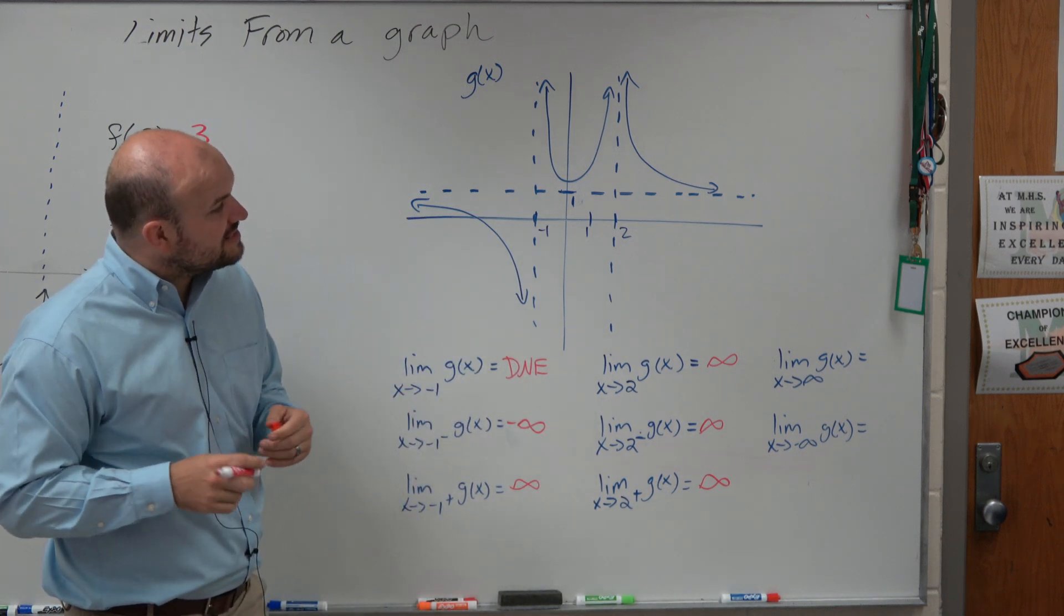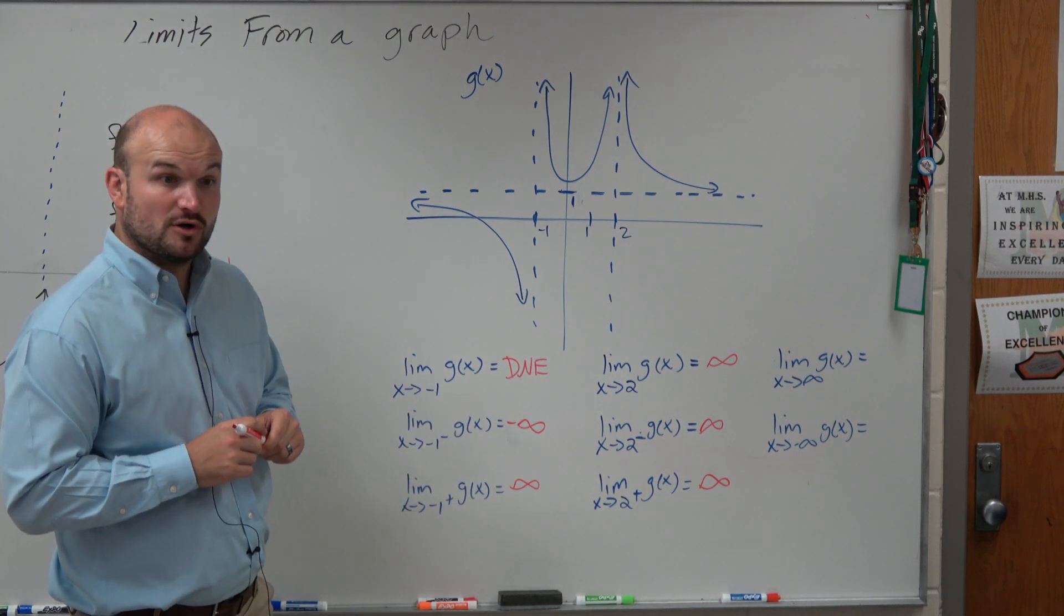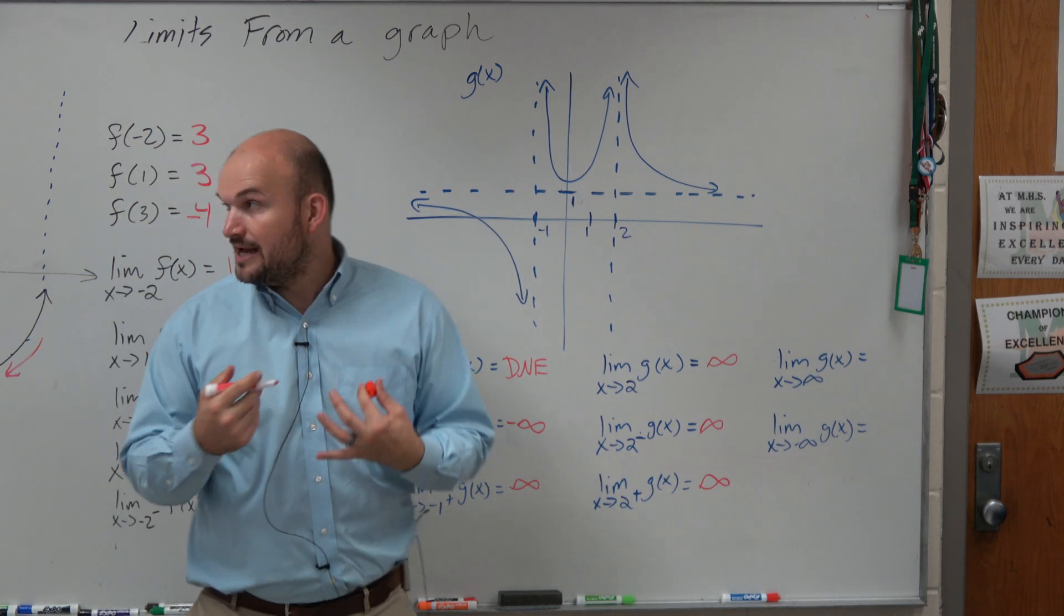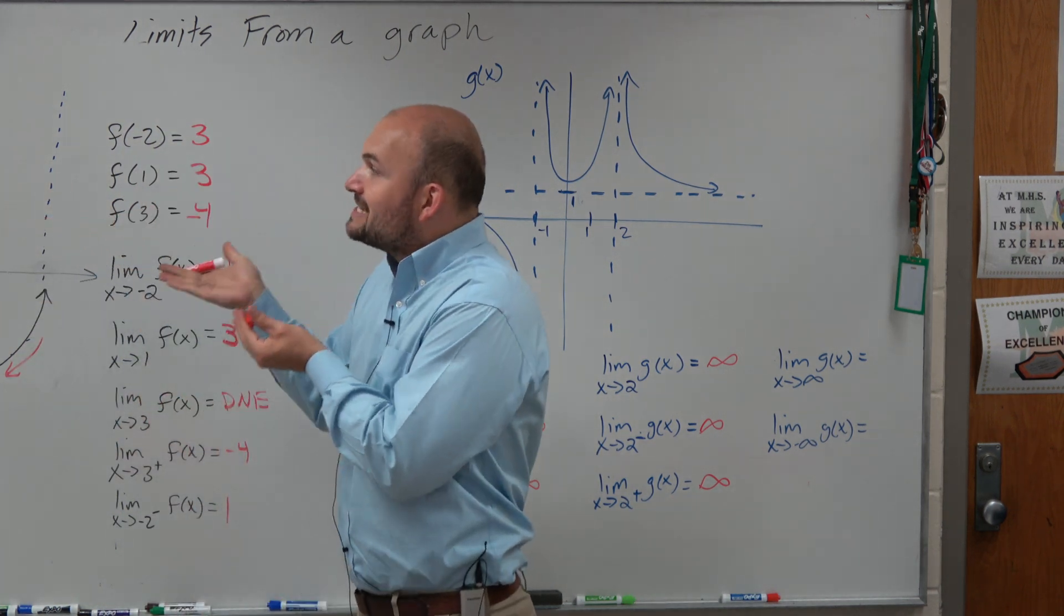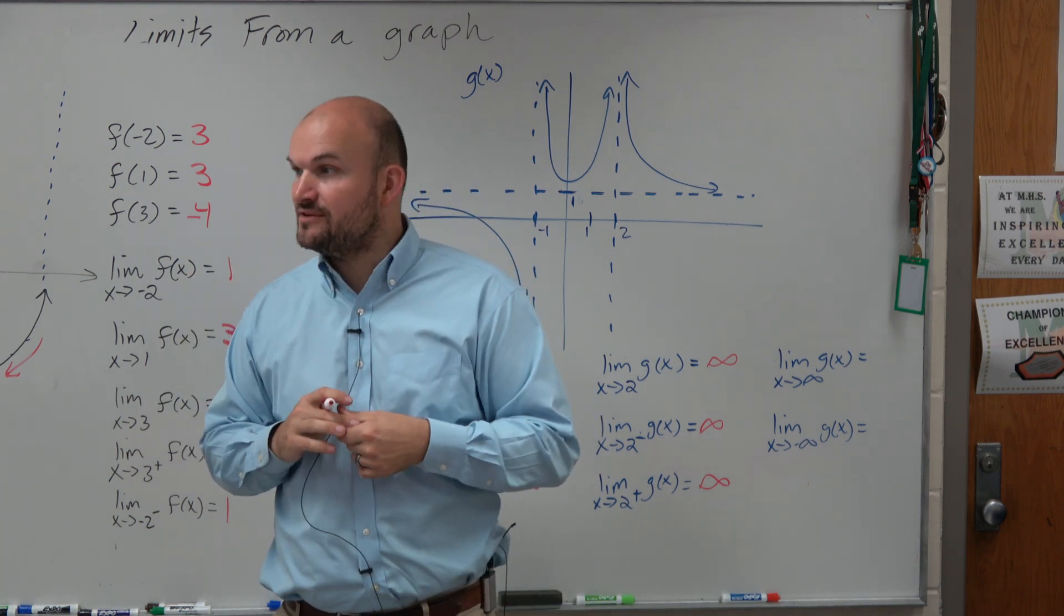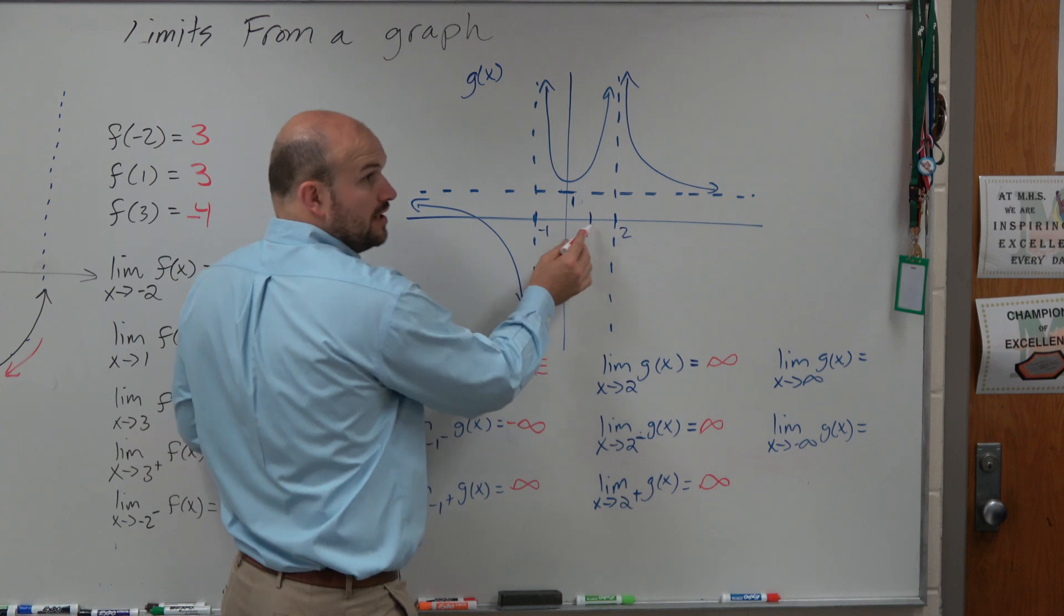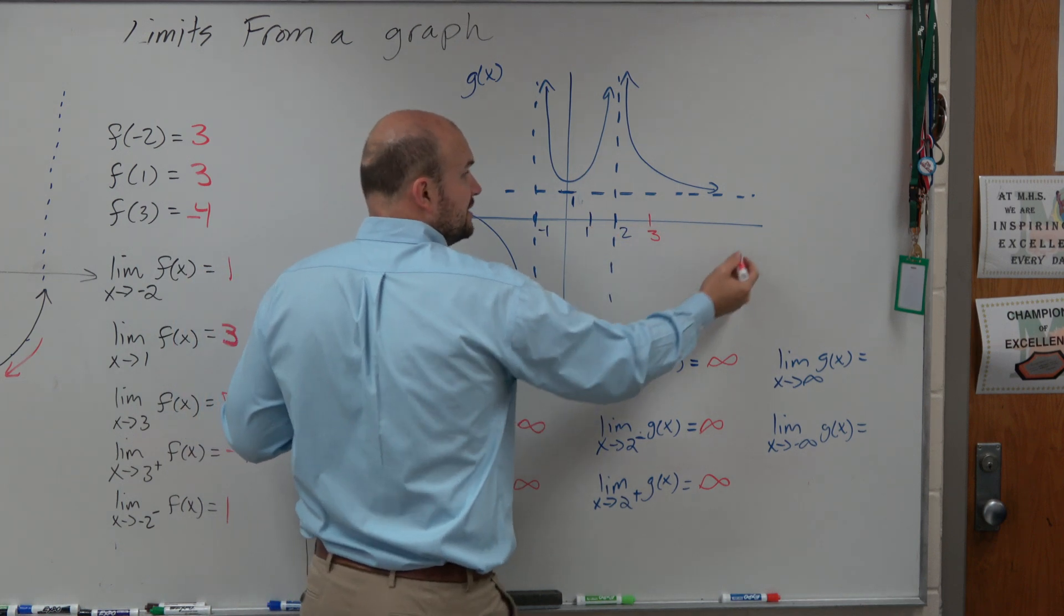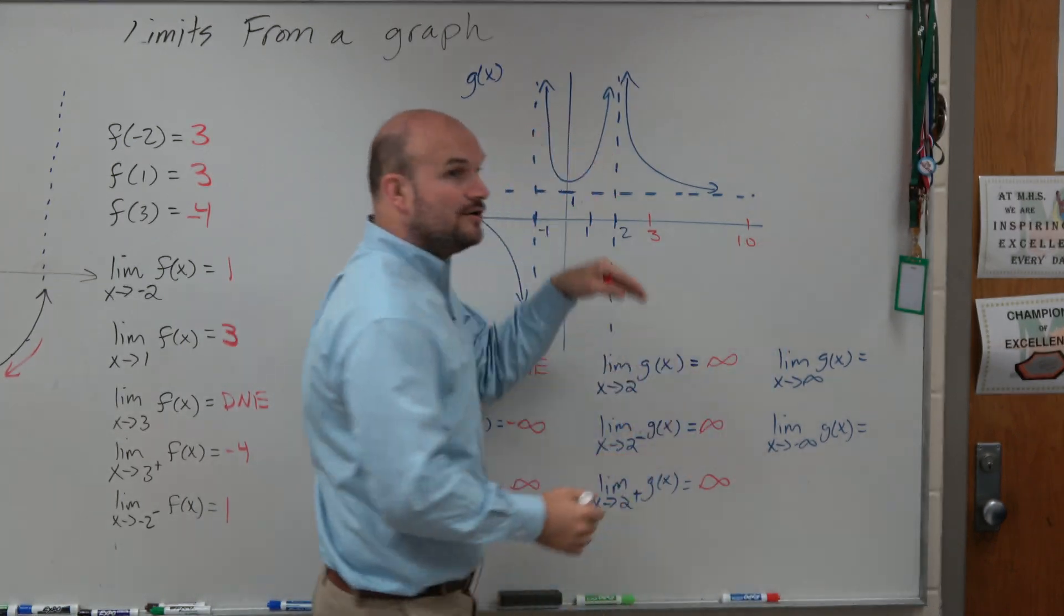And then last but not least is we have as x approaches infinity and x approaches negative infinity. So again, remember my verbiage I said. As x approaches infinity is basically saying as x goes to more and more positive values. So here's 1, here's 2, 3, and then we can go to 10. And as we keep on going to the right,